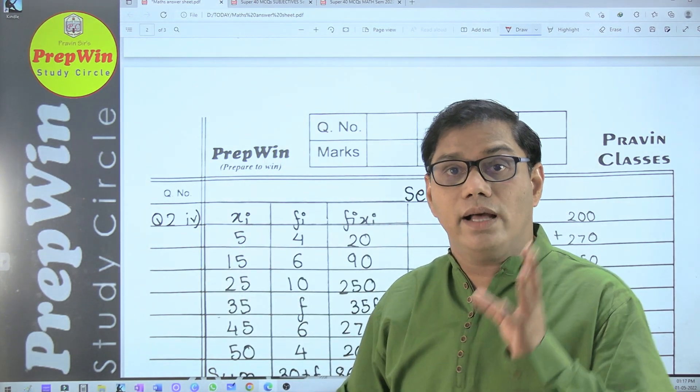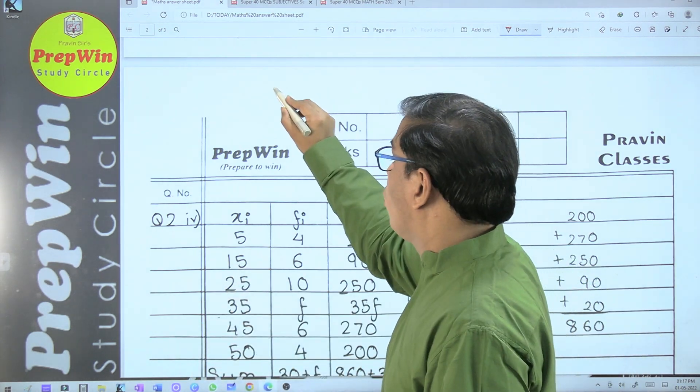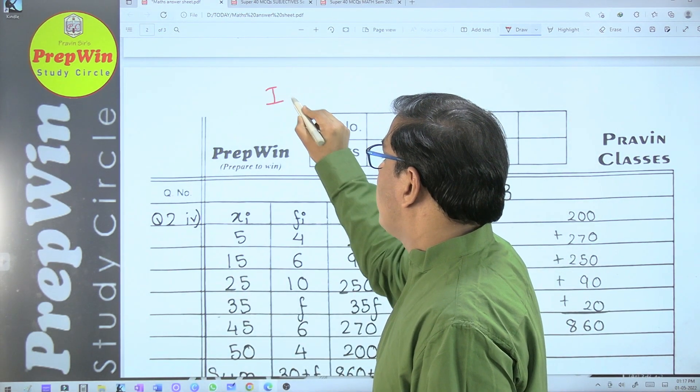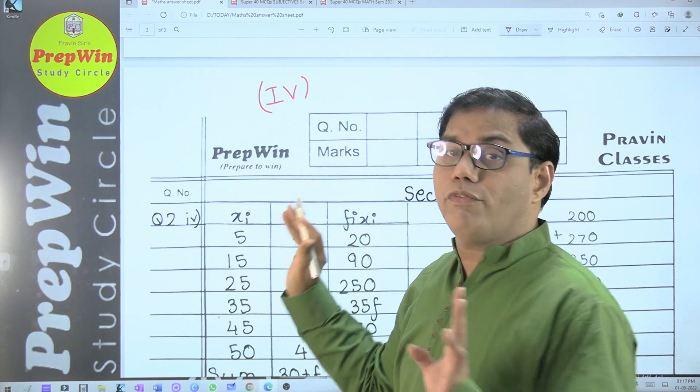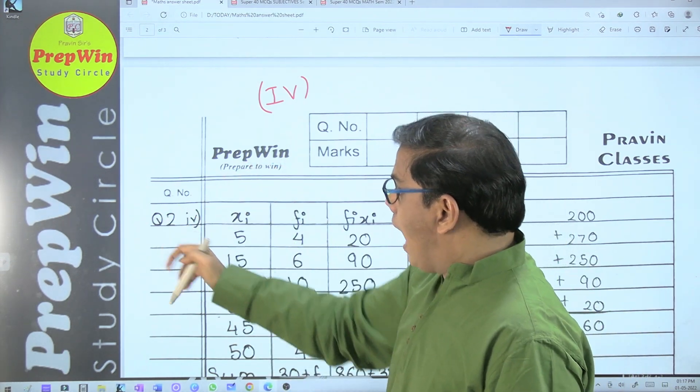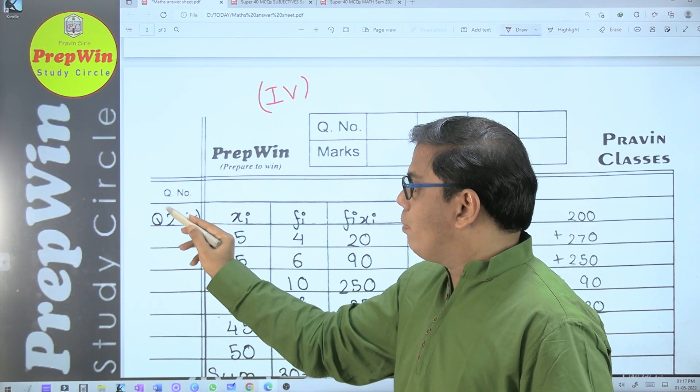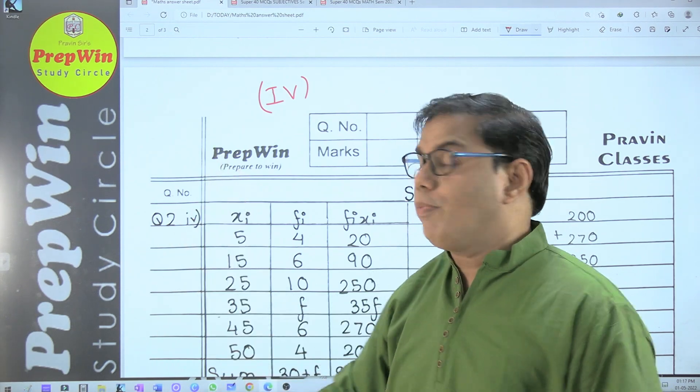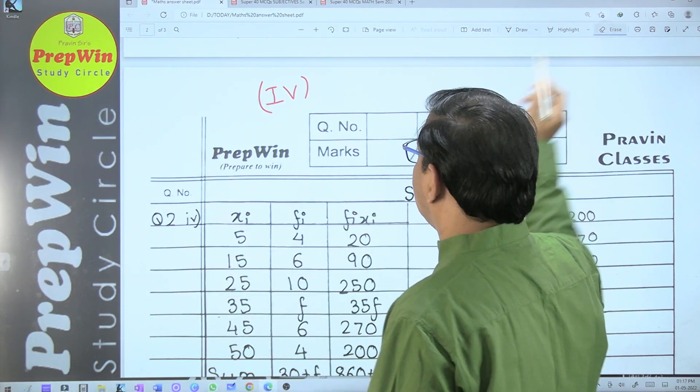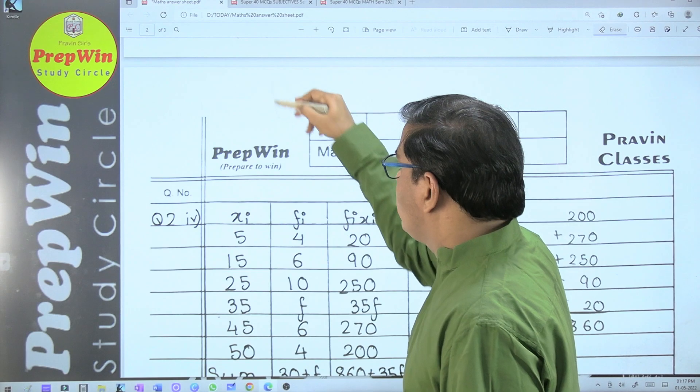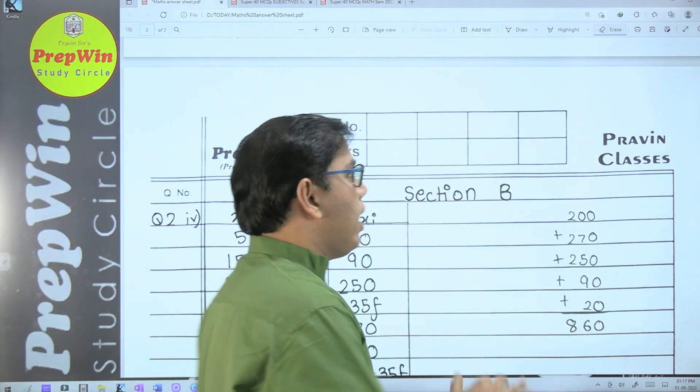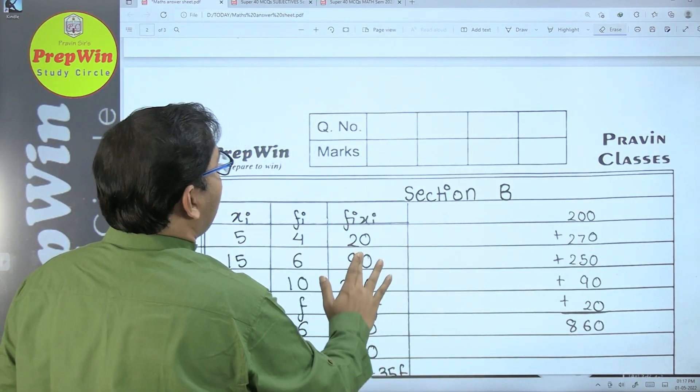If small Roman numbers are given in the question paper, then you have to write in small Roman numbers. You cannot write something different. If the question paper says Q2, then you have to write exactly the same: Q2. Now we will discuss how to use a working column.